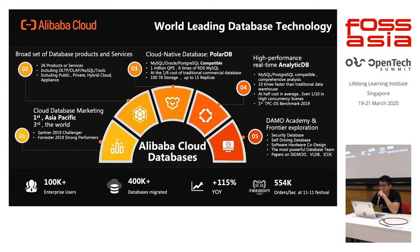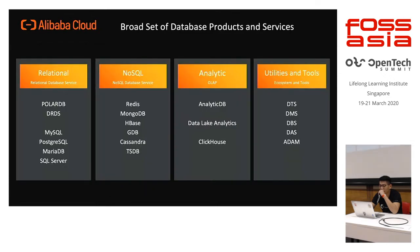One cool thing to say is that during Double 11 last year, the entire workload was supported on Alibaba Cloud. We were able to process about 500 over 1,000 orders per second, which was quite impressive. We have different types of databases: relational databases, NoSQL, analytic, and certain tools.